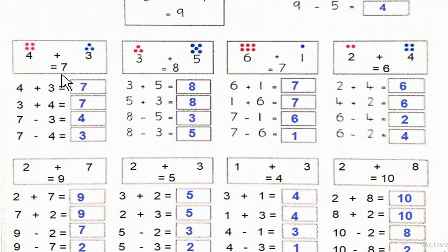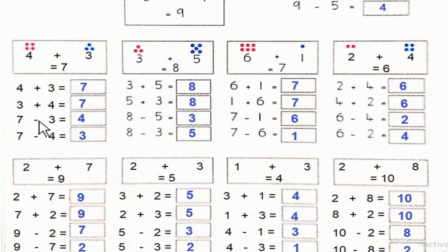4 plus 3 is equal to 7. 3 plus 4 is also equal to 7. 7 minus 3 is equal to 4. And 7 minus 4 is equal to 3.